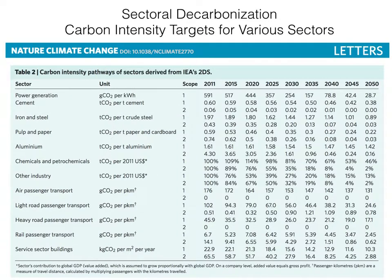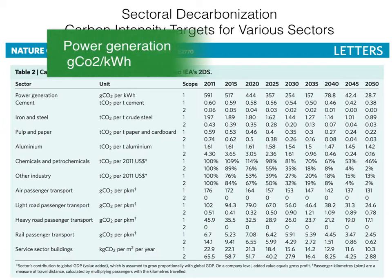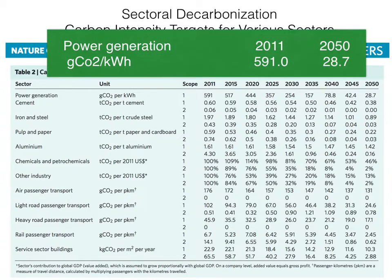Here's a table from the sectoral decarbonization paper that shows recommended intensity reduction paths for 11 named industries. For some, the reductions are huge. The first line shows power generation going from 591 grams per kilowatt hour to 28.7 grams — that's a 95% decrease by 2050. I suspect this is because renewables will replace a lot of fossil fuel generation and there'll be efficiency gains in grid transport and demand-side efficiencies.